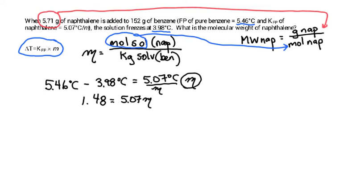Divide both sides by 5.07 and you get that the molality of the solution is 0.292 molal. That equals moles of naphthalene divided by kilograms of the solvent. We know that we have 152 grams of the solvent. So 152 grams is 0.152 kilograms.